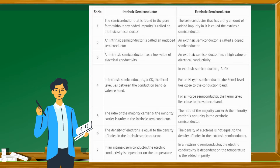Number 4: In intrinsic semiconductors at zero K, the Fermi level lies between the conduction band and valence band. In extrinsic semiconductors at zero K, for an n-type semiconductor the Fermi level lies close to the conduction band, and for a p-type semiconductor the Fermi level lies close to the valence band.